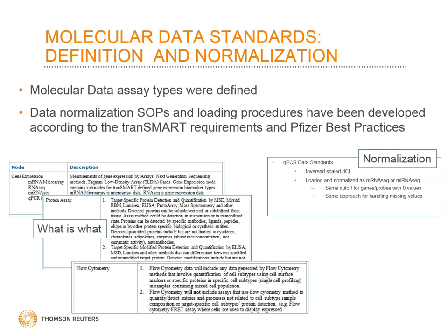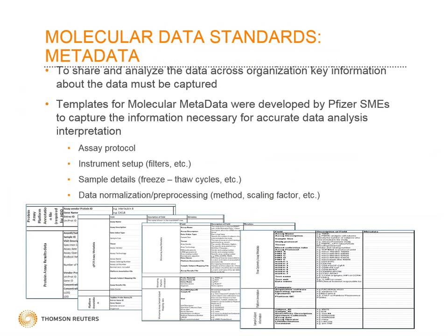The first order of business was what goes in biomarker data versus clinical data. We came to a conclusion pretty quickly. All data now in Pfizer trees are organized consistently. Data generated in a controlled GLP environment, even if molecular, stays in the clinical data folder — sometimes placed in both folders. All data generated for exploratory purposes and not GLP-controlled go into biomarker data. It can be high-dimensional or low-dimensional data generated for biomarker research.